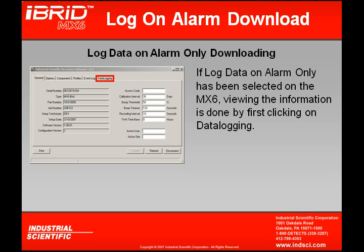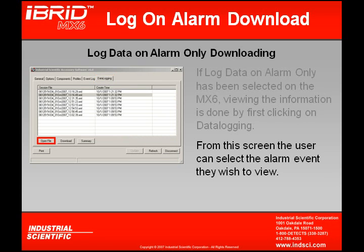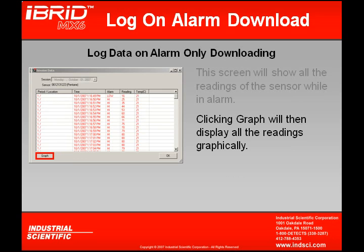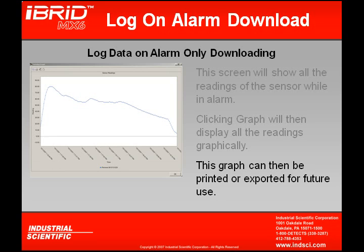Now let's look at downloading my information if I have Log Data on Alarm Only selected as my data logging option. What we're looking at now is all our specific alarm events. If I wish to view one, I can highlight it and by clicking Open File, I can view that information. All my readings will then be displayed on the computer and they're all in red, because the instrument only logged this data when it was in alarm. If I wish to graphically view this information, by clicking Graph, I can see it graphically. With my sensor readings showing graphically on my computer screen, I could take this information and print it, export it, or save it for future use.